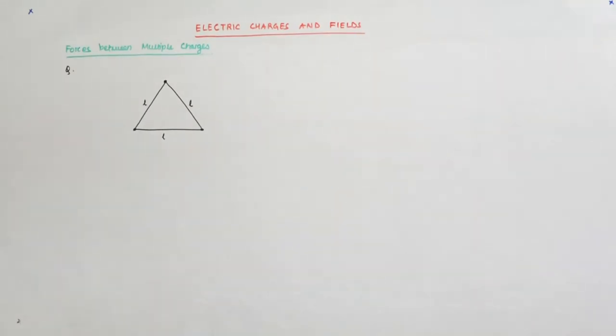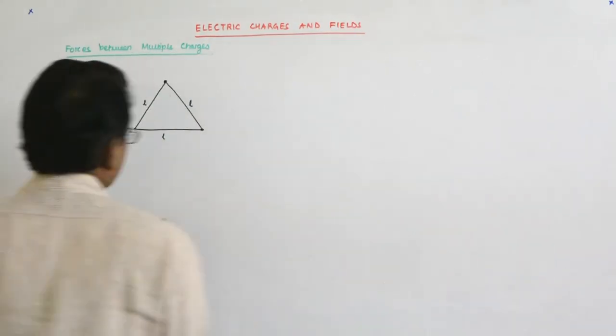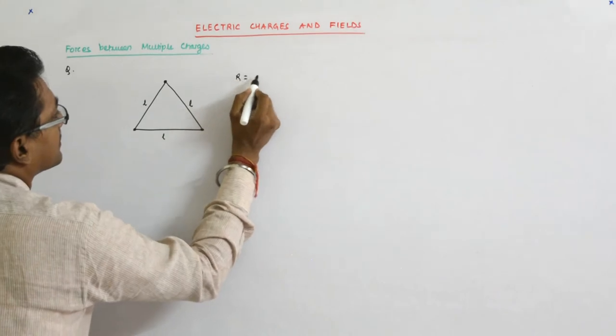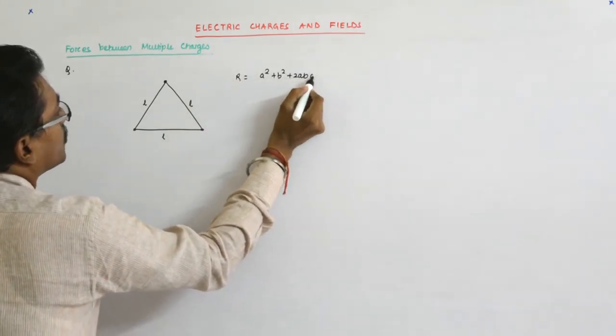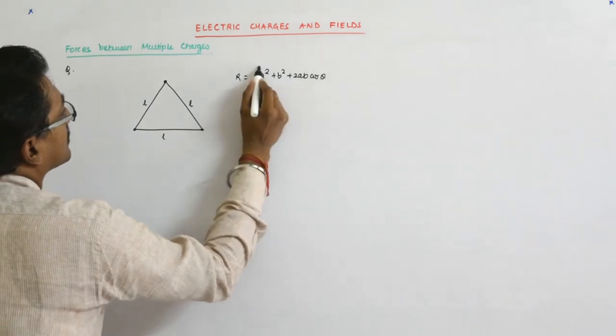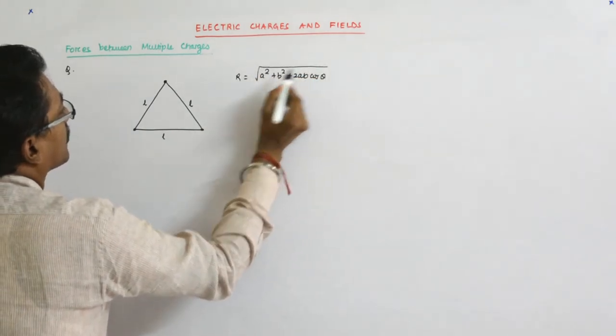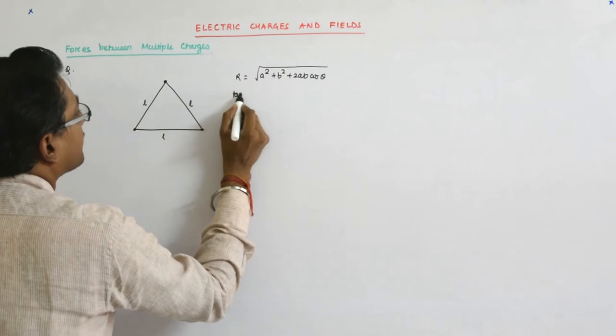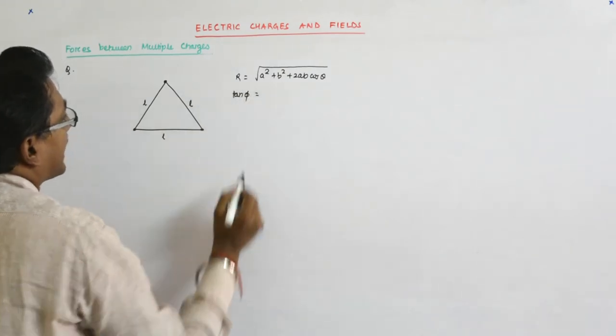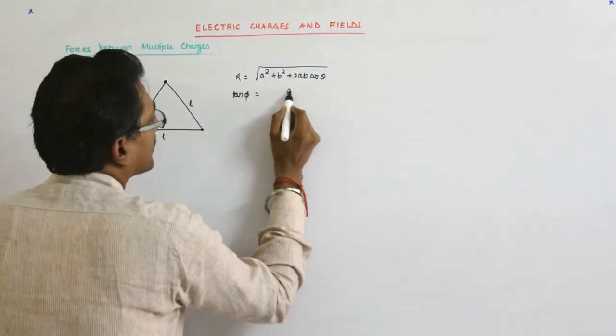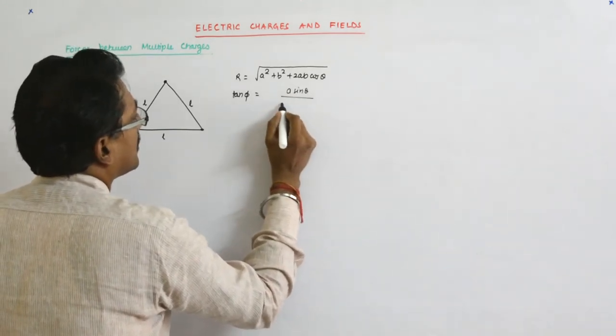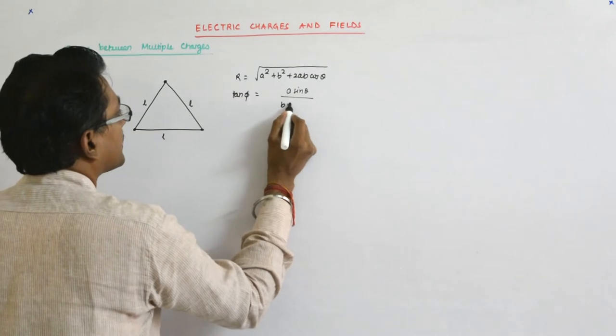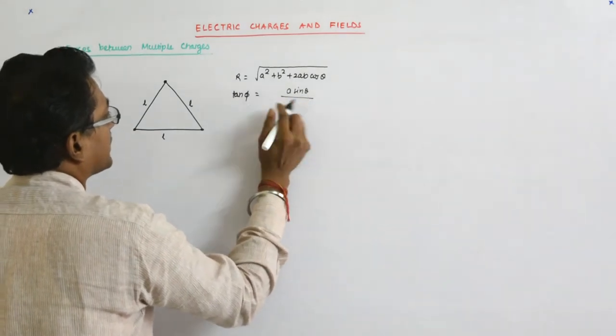So let us try to solve this problem by the method we just discussed. That method says r is equal to square root of a square plus b square plus 2ab cos theta, and tan phi is equal to a sine theta upon b plus a cos theta.